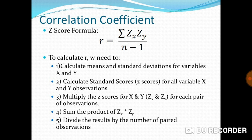Second, calculate standard scores (z-scores) for all variable X and Y observations. Three, multiply the z-scores for X and Y (Zₓ and Zᵧ) for each pair of observations.